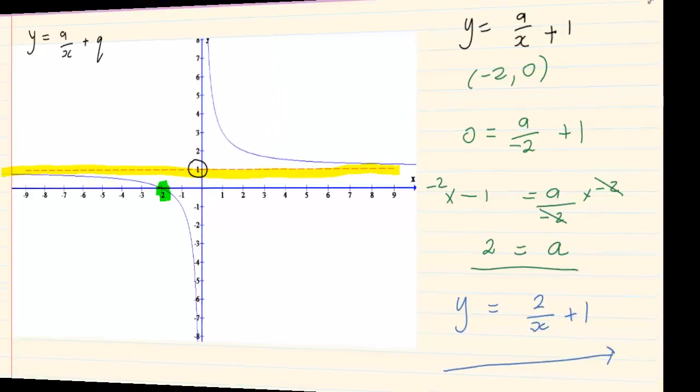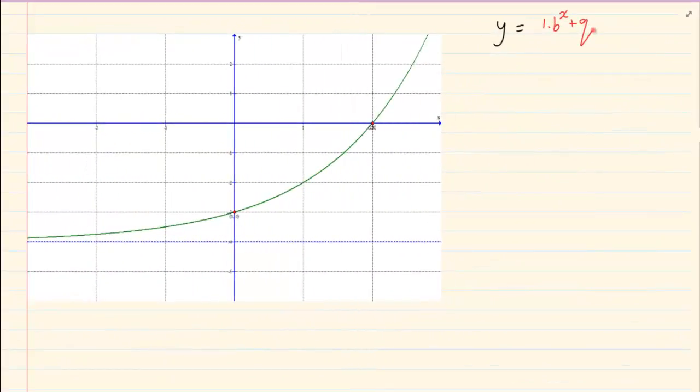Now let us look at the exponential graph. Okay, so what do we do? Again, when you look at this equation, you will notice with exponential, they usually have a and b. But they tend to give you a or b.